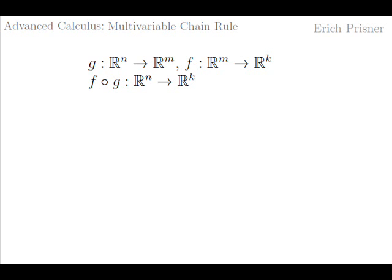If n, m, and k are all equal to 1, we have the classical Calculus 1 situation. Here we assume that at least one of m, n, and k is larger than 1. We consider the following three situations.